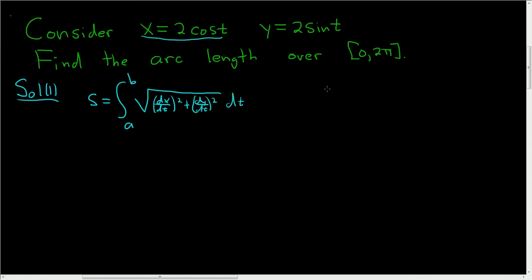here's our x, so dx/dt, well the derivative of cosine is negative sine, so this will be negative 2 sine t.